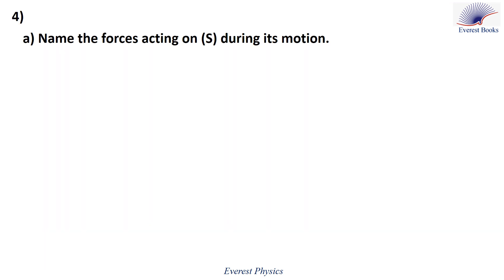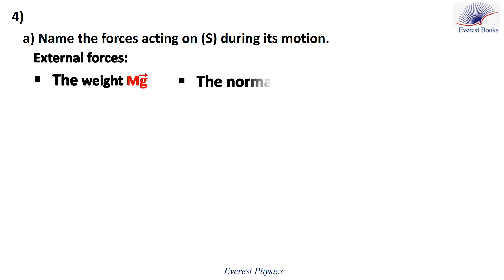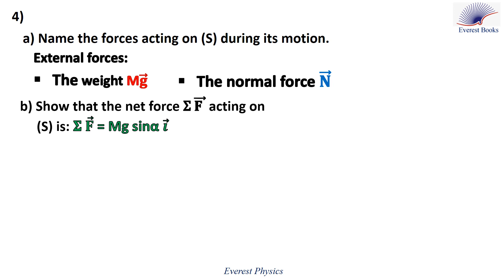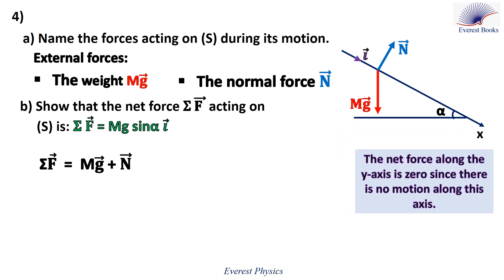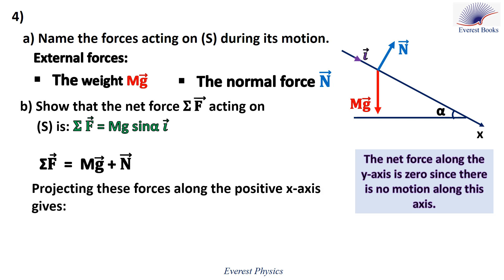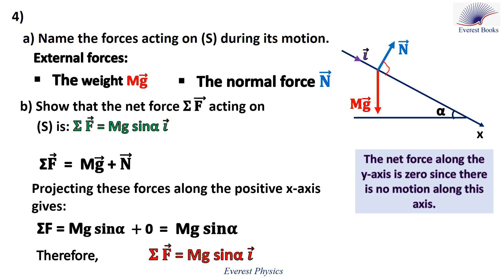Part 4a: The external forces acting on S are its weight Mg and the normal force N. Part 4b: Show that the net force on S is Mg·sin(alpha)·i. The sum of forces is Mg plus N. Since there is no motion along the y-axis, the net force along y is 0. Projecting along the positive x-axis: the projection of Mg is Mg·sin(alpha), and N is normal to the x-axis so its projection is 0. Therefore, the net force vector acting on S is Mg·sin(alpha)·i.